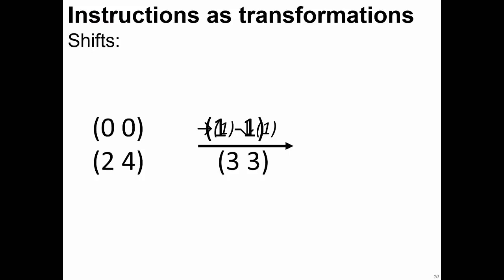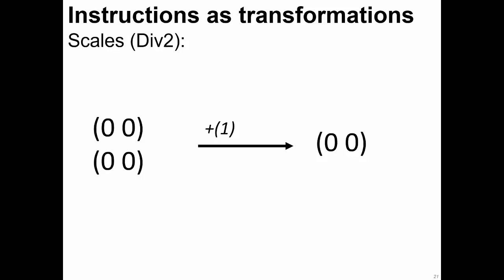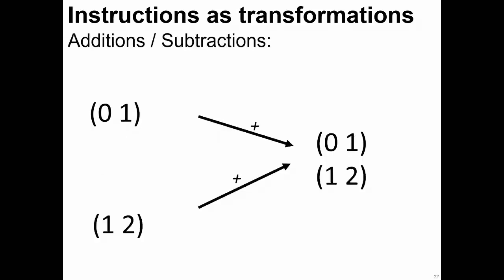All processor instructions are mapped to transformations on these sets. For example, a shift transformation moves the set one pixel right and one pixel down, yielding a new set. Scaling by dividing by 2 eliminates half of the representatives in the set. And additions are simply the union of two sets.